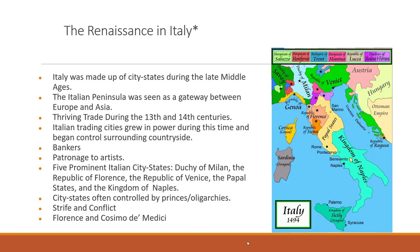Over time there was strife and conflict among the Italian city-states, with many cities controlled by particular families. Florence was controlled by the de' Medici family, and one prominent leader was Cosimo de' Medici—a very wealthy banker who was a patron of artists and supported them financially.